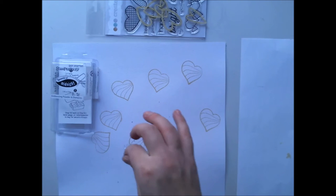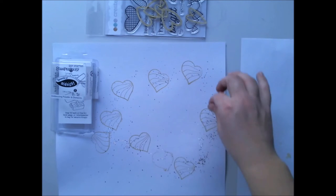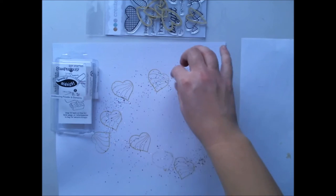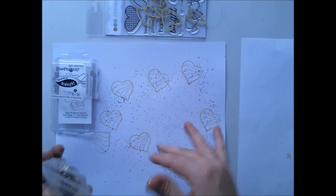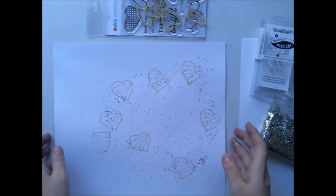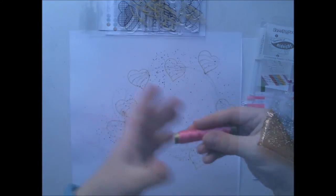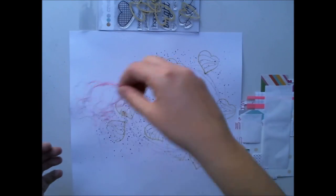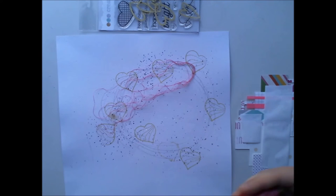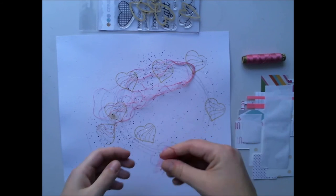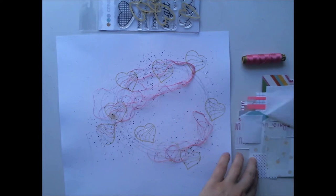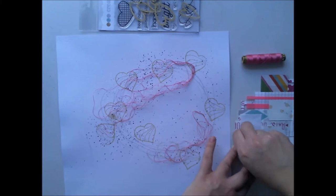I have this embossing glitter from Stampendous. You don't use any ink for it. You just drop it to your paper and use a heat gun to set it. So I almost burned the paper. I did but never mind. I will put some embellishment on it.